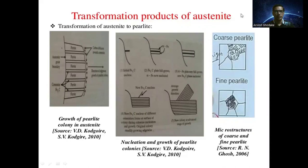Now we will see the transformation products of austenite. Austenite is the solid phase which gets transformed into various products whenever it cools from 1147 degrees Celsius. The second reaction is the eutectoid transformation, where the transformation products of austenite occur.